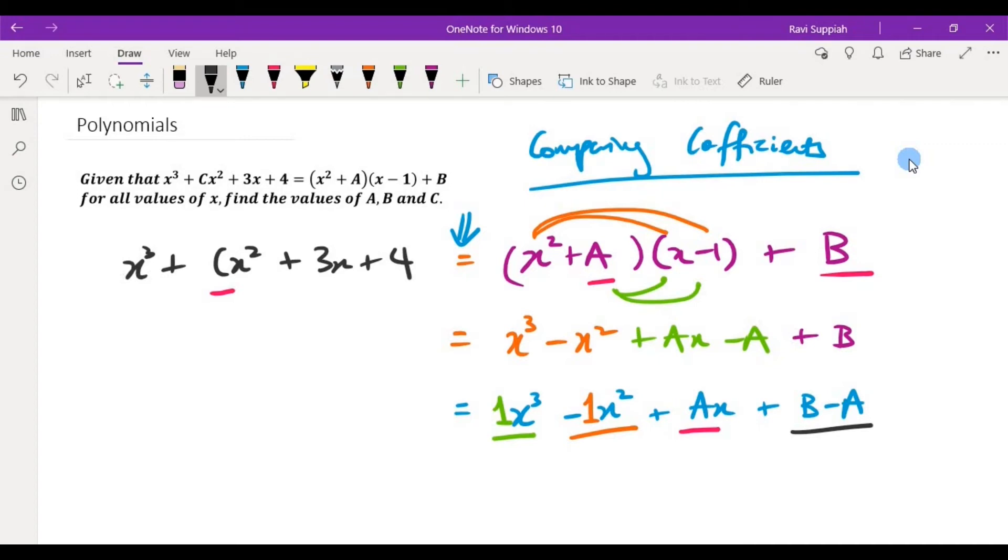On the left hand side, what do I have? I have x cubed plus cx squared plus 3x plus 4.